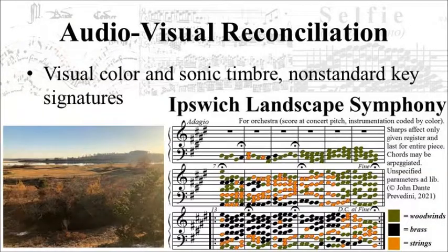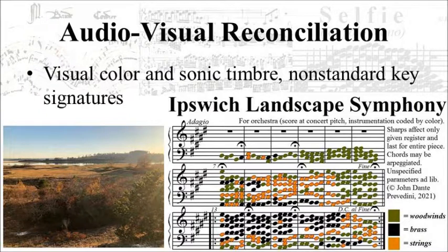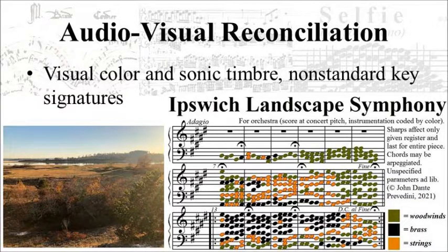Next, here's an example of audiovisual reconciliation using color. This is a transcription of a landscape photo in which visual color is transformed into orchestral timbre. Also, as with the previous piece, you'll notice it has a non-standard key signature in the Bartók tradition. This is a way of introducing harmonic variety into Augenmusik without having to break up the visual image horizontally with accidentals of the notation. In both pieces, I use non-standard key signatures to indicate a scale that repeats at the perfect fifth instead of the octave.